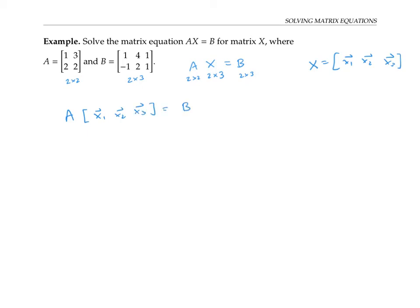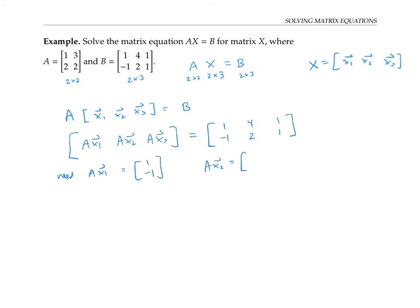In a previous video on interpreting matrix multiplication, we saw that when we multiply a matrix by another matrix, we can accomplish that by multiplying the first matrix times each column of the second matrix separately, and then concatenating them together. So A times the matrix with columns x1, x2, x3 is the same as a result matrix with columns A·x1, A·x2, A·x3. That has to equal B, which has columns [1, -1], [4, 2], and [1, 1]. So we need A·x1 = [1, -1], A·x2 = [4, 2], and A·x3 = [1, 1].